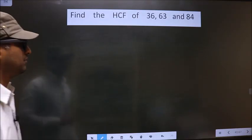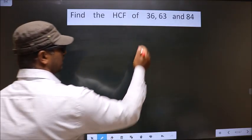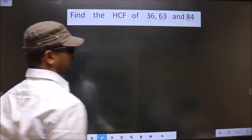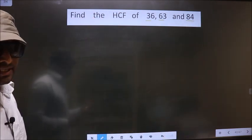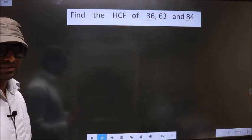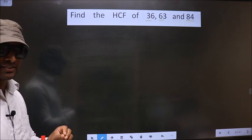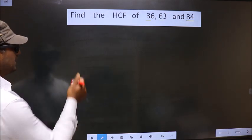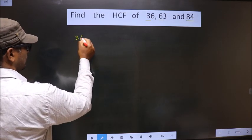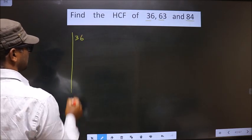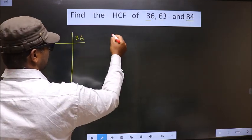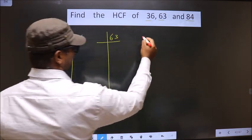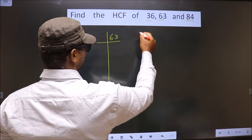Find the HCF of 36, 63, and 84. To find the HCF, first we should do prime factorization of each number separately. That is 36, 63, and 84.